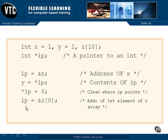Now here we are saying that ip equals the address of z sub 0, and that's the first element of the array. So ip will no longer point to x. It will be changed.